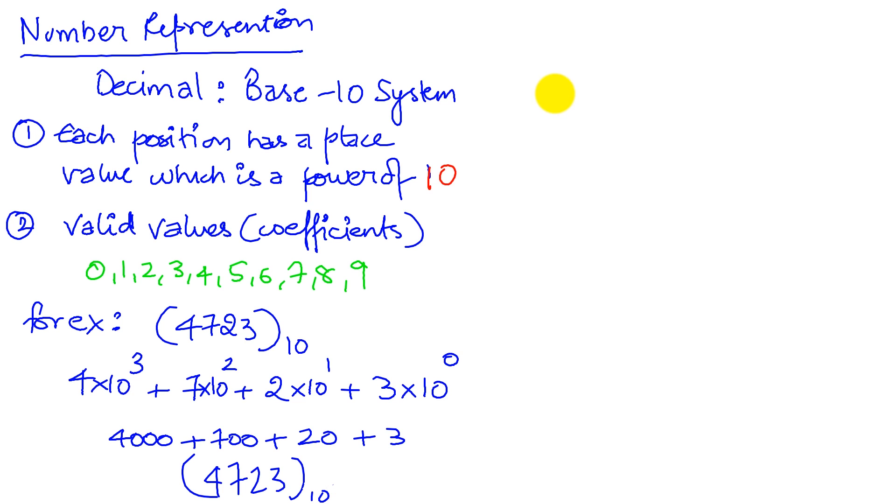Let's take a look at the binary number system, which is a base-2 number system. Again, the first thing is we have place values, which are powers of 2. And the valid values are 0 and 1.